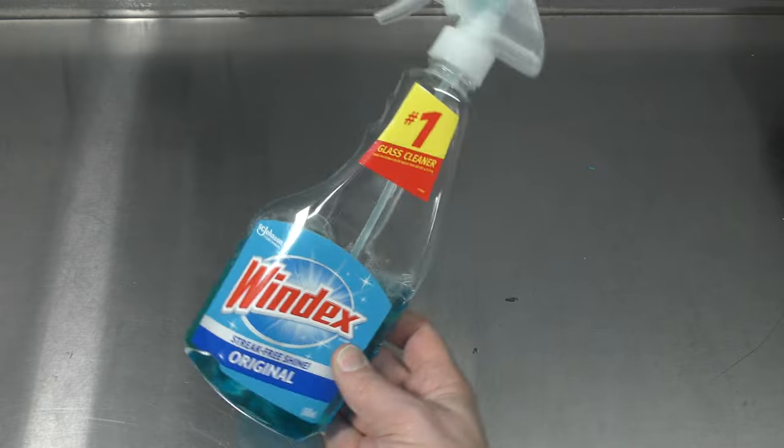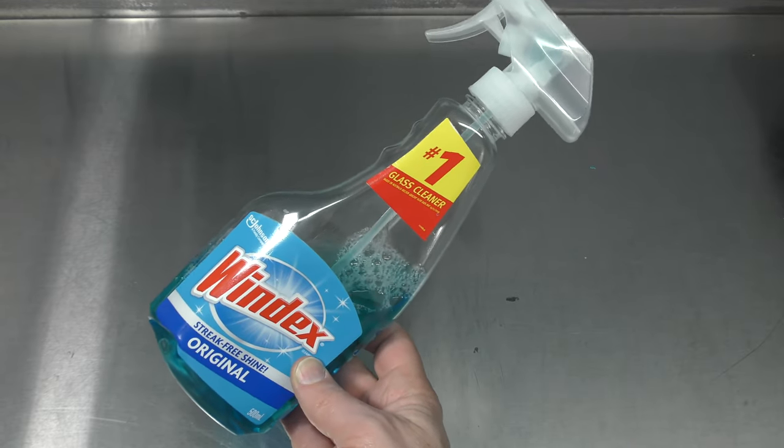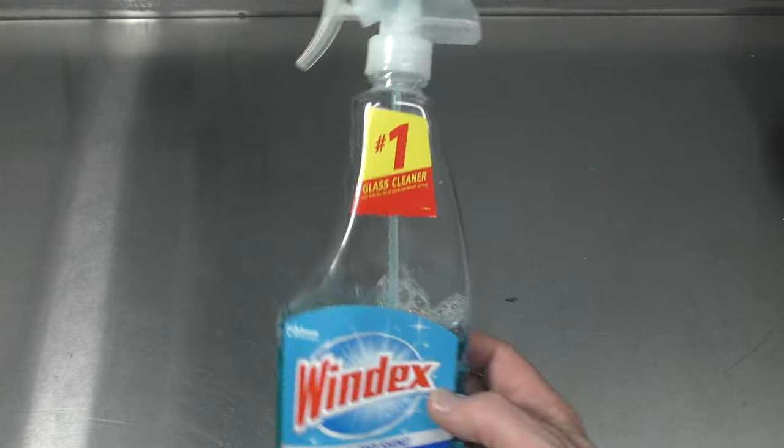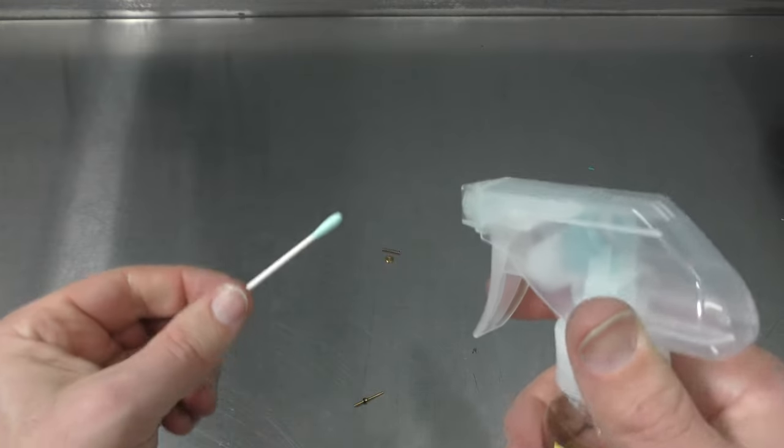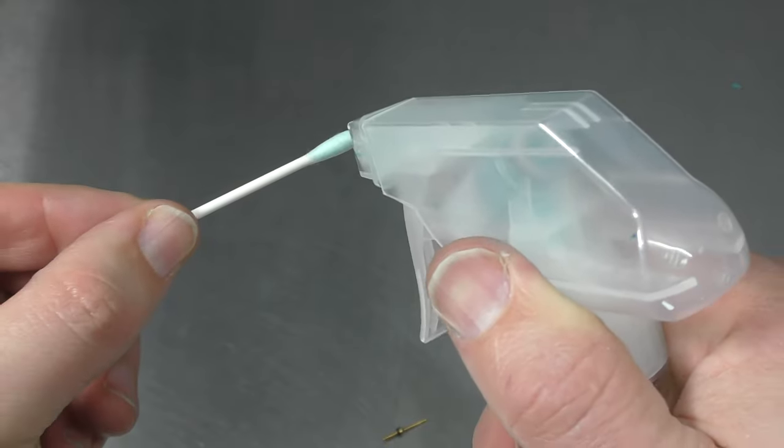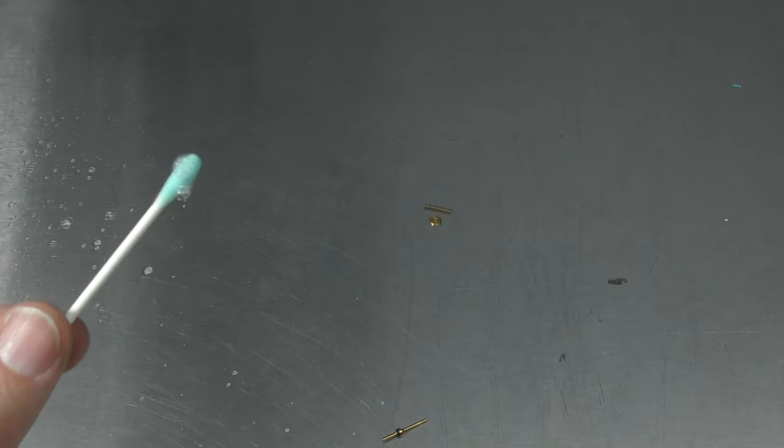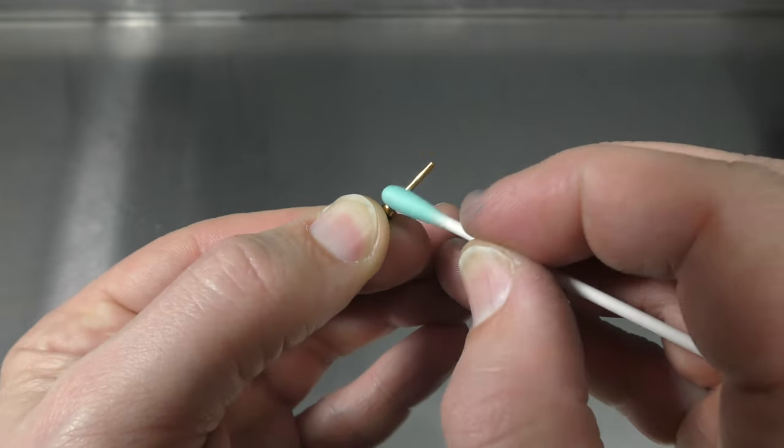If you're using water-based paints I like to give it a bit of a clean with some glass cleaner. Get the one with the ammonia in it as that will help to clean any of the surfaces. I like to just spray a couple of times on the end of the cotton bud and then give it a clean like so.